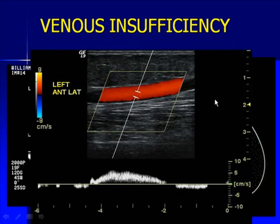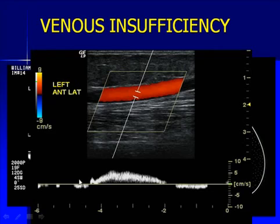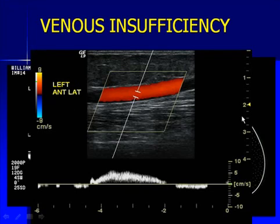The same applies to any branches seen off the saphenous vein. This is a large varicose branch coming over the anterolateral aspect of the left thigh. With proximal compression above the site of Doppler interrogation, you can see sustained reflux flow for as long as the augmentation maneuver is applied — again indicating incompetence in that particular large varicosity, which is a branch vein off the great saphenous, not the great saphenous vein itself.